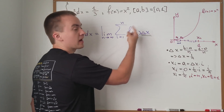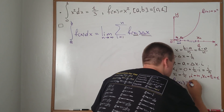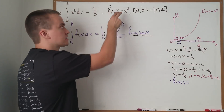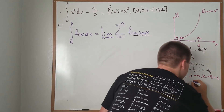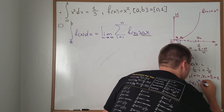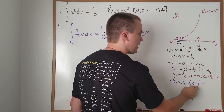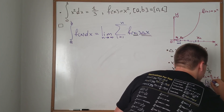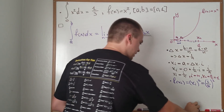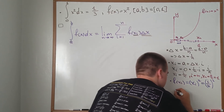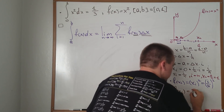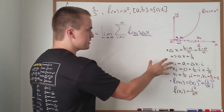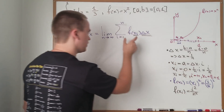The last thing we need to figure out is f(xᵢ). We plug xᵢ into our function. Since f(x) = x², we get f(xᵢ) = xᵢ² = (i/n)² = i²/n². So f(xᵢ) equals i²/n². We've now found all the important information we need to plug into our sum.